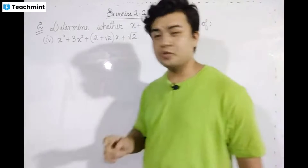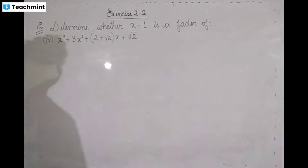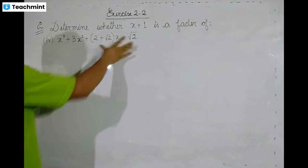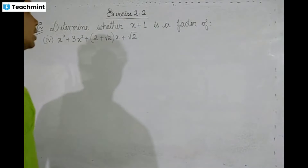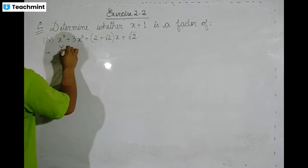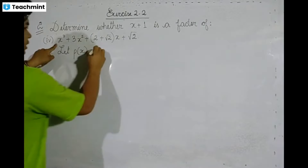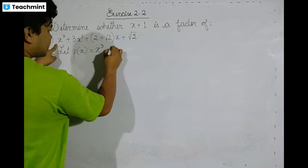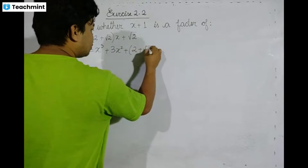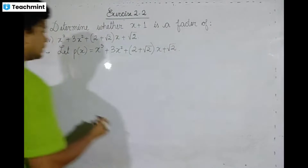Exercise 2.2, question 2.4. x plus 1. We have P(x) equal to x cubed plus 3x squared plus 2 plus root 2, times x plus root 2, which is what we have done.